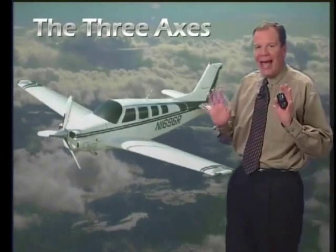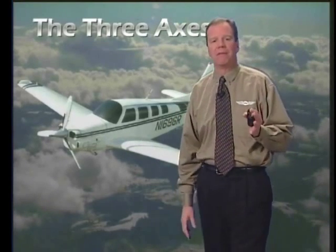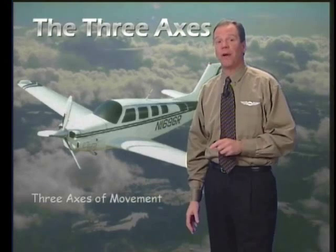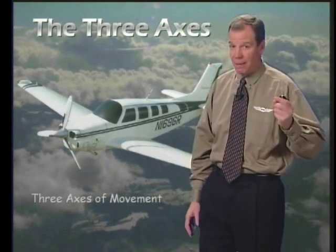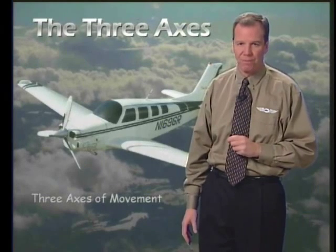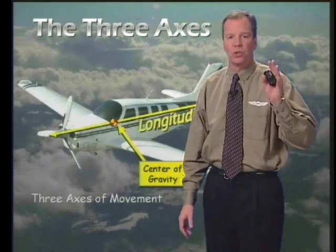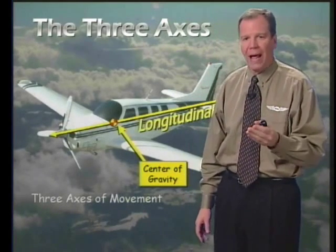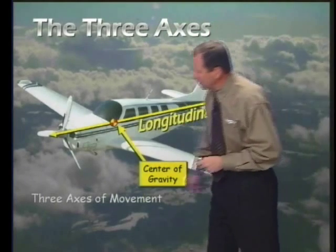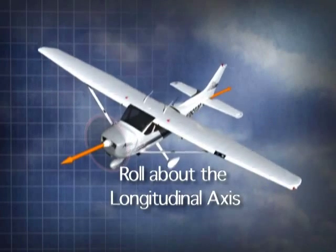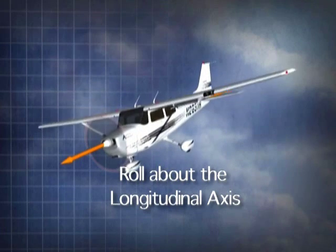Let's begin with the axis of an aircraft. As you should remember from your commercial pilot training, a fixed wing aircraft has three axes which are perpendicular to each other. These axes intersect at the center of gravity of the aircraft. The longitudinal axis, also called the roll axis or x-axis, extends lengthwise through the fuselage. The ailerons cause rotation about the longitudinal axis.